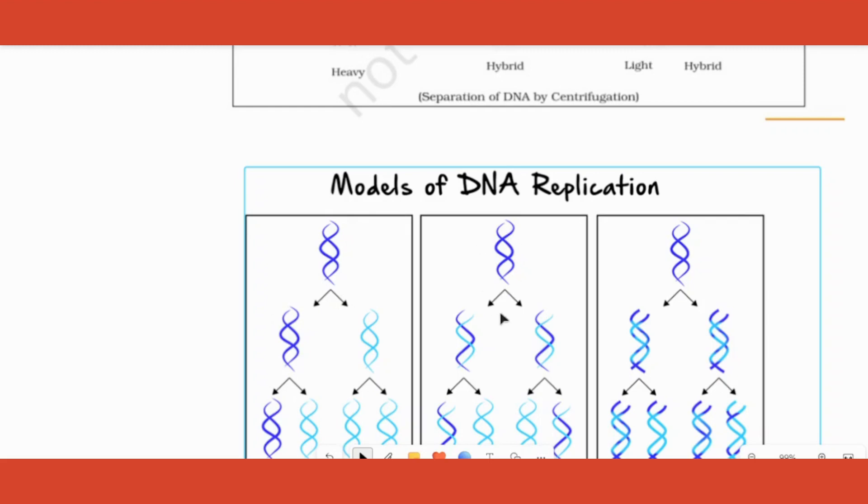The second model is called semi-conservative, and this is the one they proved that happens actually. In this case, the first DNA molecule's two strands—one strand goes into one molecule of the newly formed DNA, another strand goes over here.